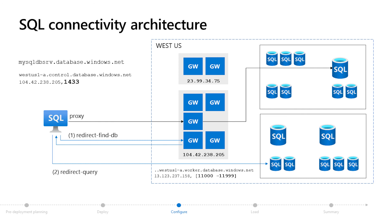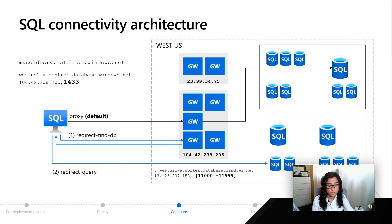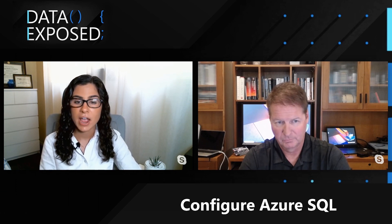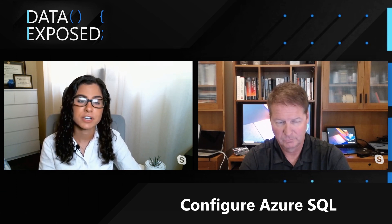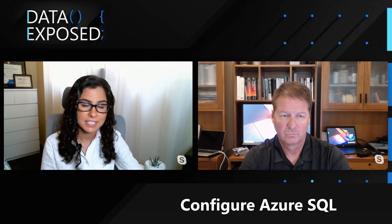While proxy is the default option, redirect can be a more performant solution. The reason we don't do redirect by default is because it requires opening up a few additional ports. So you'll need to talk to your network or security team to make sure you can connect if you switch to the redirect method. Hopefully in this video you've seen how to configure your managed instance and logical database server, including space management and connectivity to SQL.